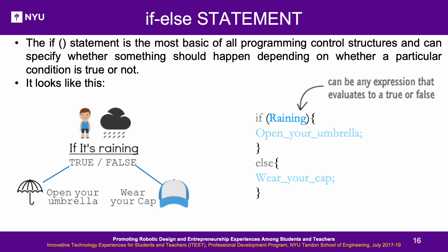If-Else Statement: This is the basic control structure that executes a set of statements if the condition is true. The compiler first checks the if condition; if true, the statements within are executed. If false, the compiler moves to the else condition. The conditional operators can be used to validate conditions. For example, when planning a walk outside, if it is raining you would use your umbrella, else you would wear a cap on a sunny day.